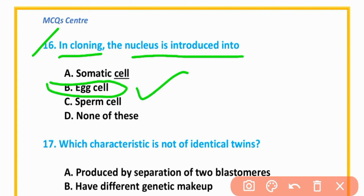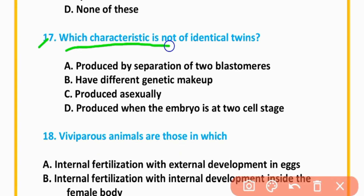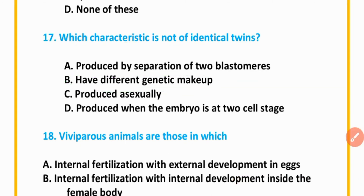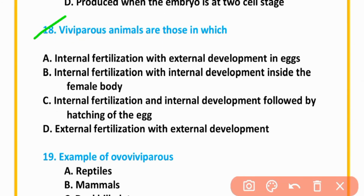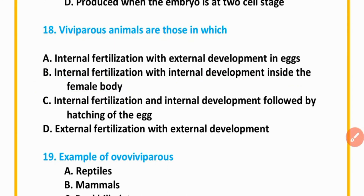MCQ number 17: Which characteristic is not of identical twins? Having different genetic makeup is not a characteristic of identical twins — option B is correct. MCQ number 18: Viviparous animals are those in which internal fertilization occurs with internal development inside the female body — option B is correct.